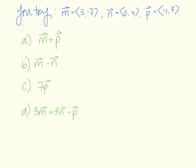Now I'd like you to try one of these as well. I'm giving you three vectors: m, n, and p. You're going to add m and p, subtract m and n, multiply p by 7, and then compute 3m plus 3n minus vector p. Try that one out.